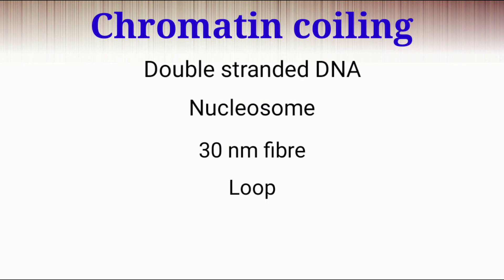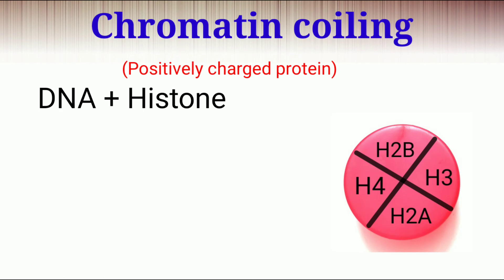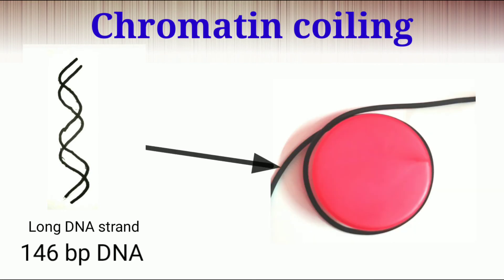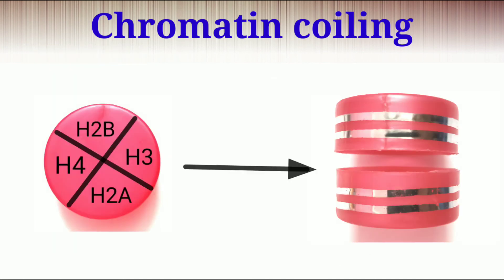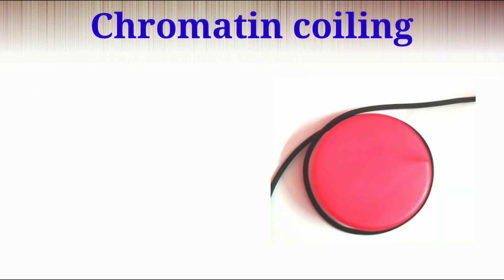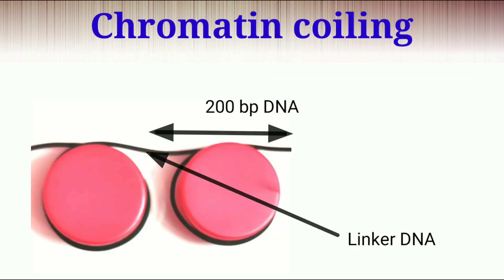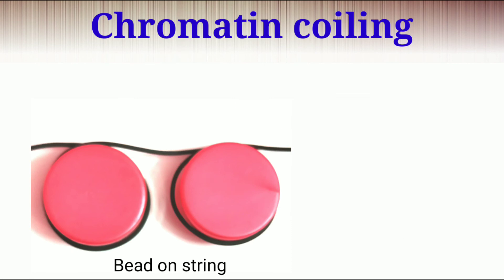The first order of compaction is called nucleosome model or beads-on-string structure. A positively charged protein called histone play important role in chromatin structure. Around 146 base pair of B-DNA make 1.65 turns around a single histone core. Histone core particles is a dimer of these subunits. Another histone protein called H1 seal the end of the DNA turns to organize additional 40 to 60 base pair of the DNA that linked next nucleosome. So in total, 200 base pair B-DNA is coiled in a single nucleosome.